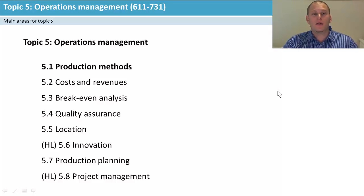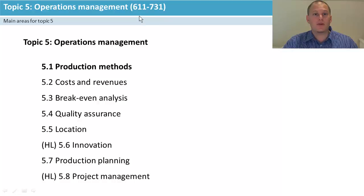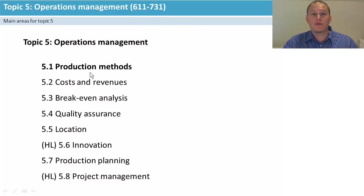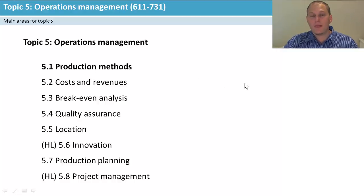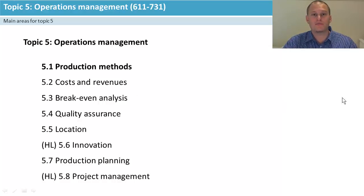Hello and welcome to Topic 5 Operations Management. If you have a look in the textbook you'll find this on pages 611 to 731. Today we're going to go through Topic 5.1 Production Methods, which has two parts, and when we're done on this one we're going to jump on to 5.2 Costs and Revenue.